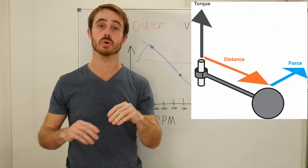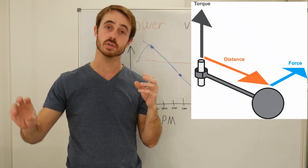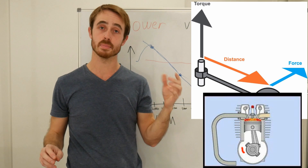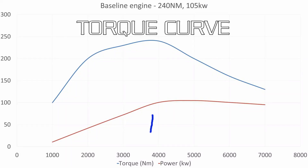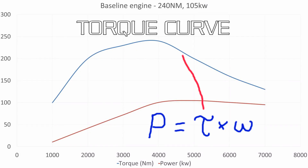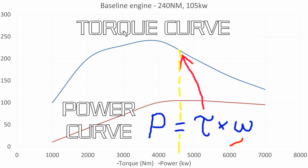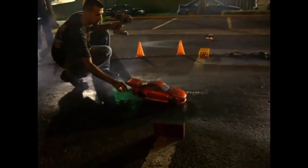Torque is a twisting force traveling through the drivetrain provided by something such as an engine or a motor. Power is simply the torque at the location you're looking at multiplied by the rotation rate of that location.